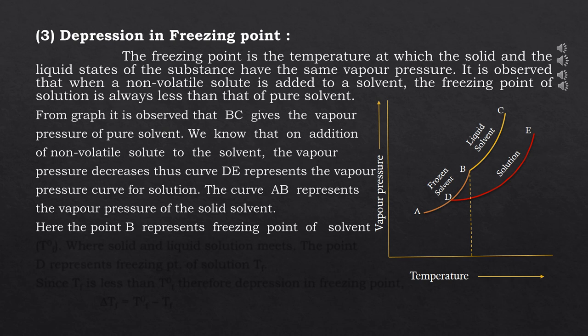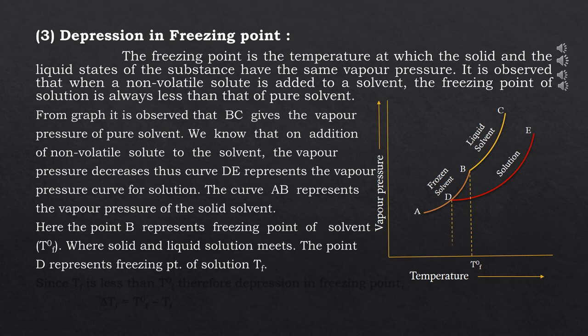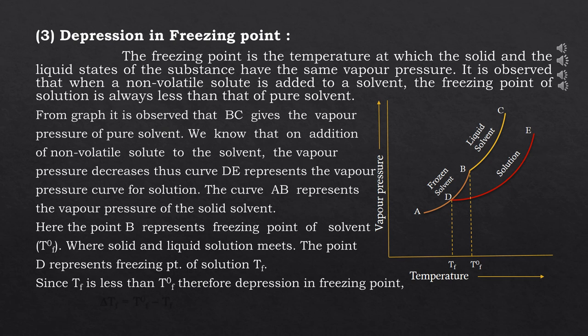The curve AB represents the vapor pressure of the solid solvent, that is the frozen solvent. The temperature corresponding to point B, where the solid and liquid solvent meet, represents the freezing point of the pure solvent, Tf0. The temperature corresponding to point D, where the solid solvent and liquid solution meet, represents the freezing point of the solution, Tf. Since Tf is less than Tf0, the depression in freezing point is given as ΔTf = Tf0 − Tf.